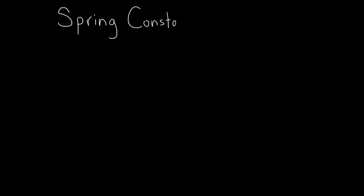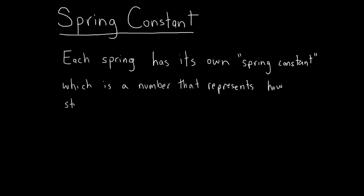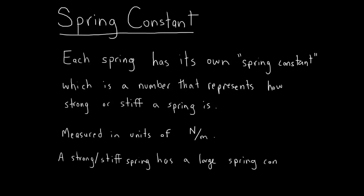With springs, we have a new concept called the spring constant. Each spring has its own spring constant, which is a number that represents how strong or stiff the spring is. The spring constant is measured in units of newtons per meter. A strong spring has a large spring constant, and a weak spring has a small spring constant.